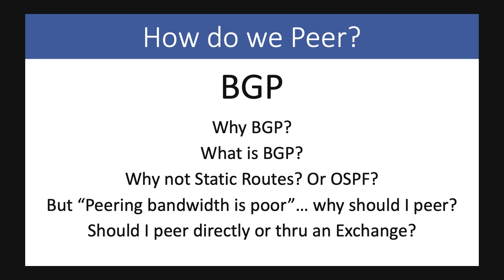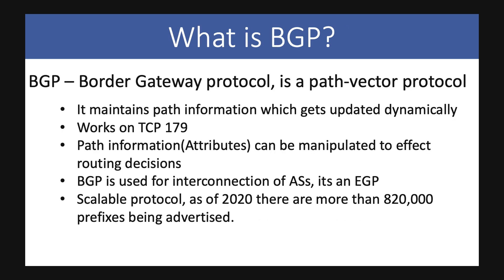BGP — Border Gateway Protocol — is a routing protocol where both sides exchange routes dynamically. It works on a TCP connection, unlike OSPF and EIGRP which work on multicast. In BGP you can establish connections more than one hop away, unlike OSPF where you can only establish next-hop connections. The main reason we use BGP is scalability: as of 2020 there are more than 820,000 route prefixes being advertised across the internet, and BGP is built to handle that scale.